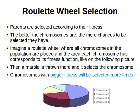Imagine a roulette wheel, as you can see at the bottom, where all chromosomes in the population are placed and the area each chromosome covers corresponds to its fitness. This purple chromosome covers almost half of the roulette wheel, meaning it has a very large fitness value, while others cover smaller slices. If we throw a marble and choose the chromosome where it settles, chromosomes with bigger fitness values will be selected more often — the marble will land on the larger area more times than on the smaller ones.